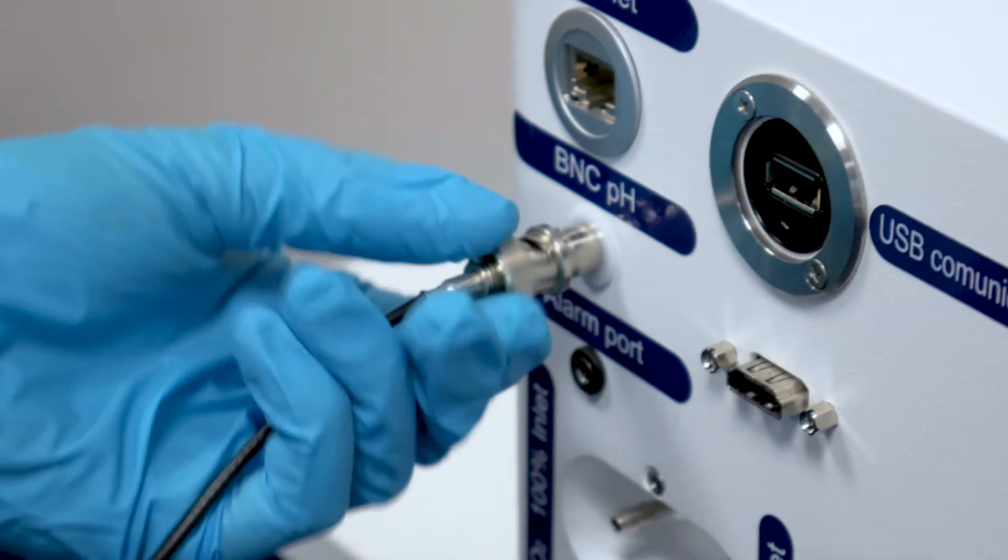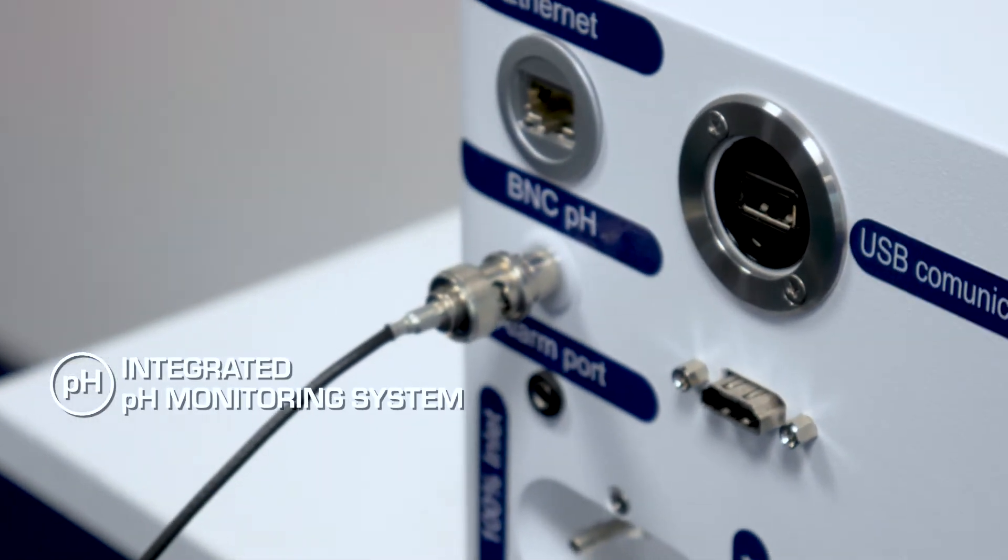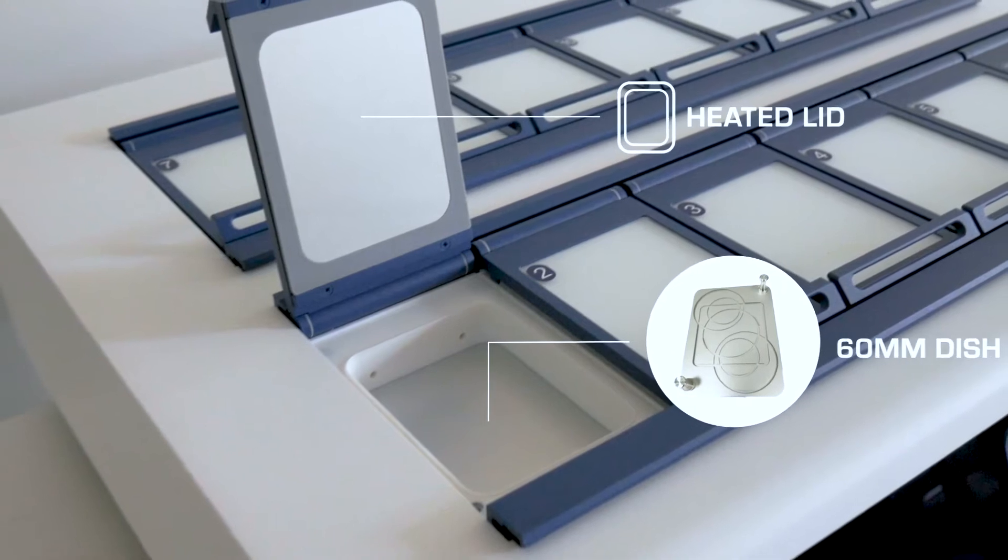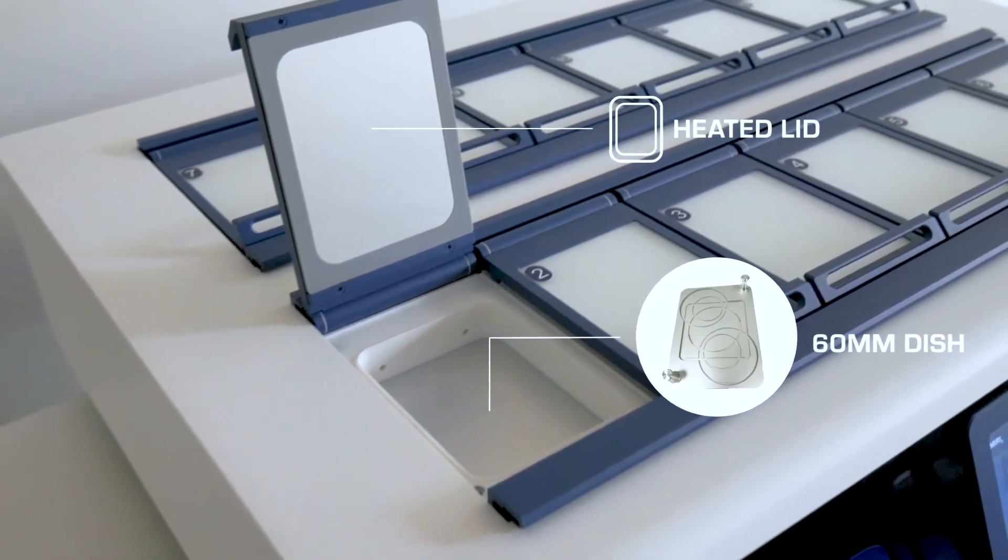MIRI-2 also has an integrated pH measuring system for pH meter application and calibration. The heated lid prevents condensation and enhances temperature uniformity across cultured dishes.